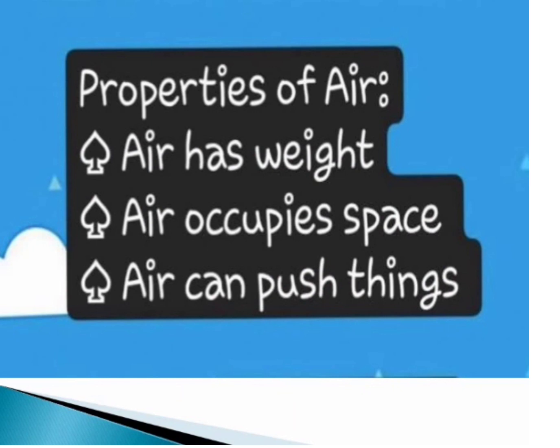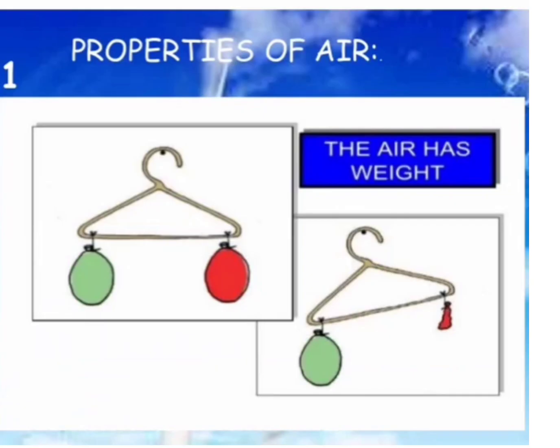The properties — or characteristics — of air are: first, air has weight; second, air occupies space; third, air can push things, or we can say air exerts pressure. Now we will discuss the properties of air in detail. The first property: air has weight. We can explain this by doing a simple activity.